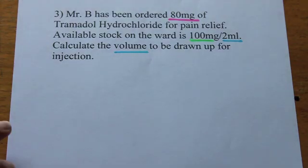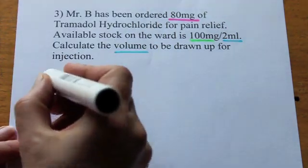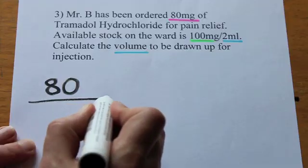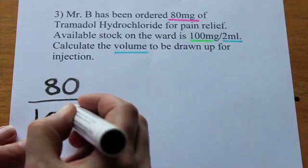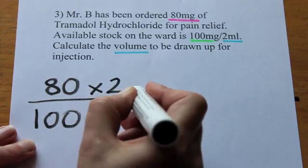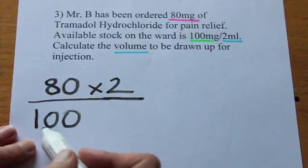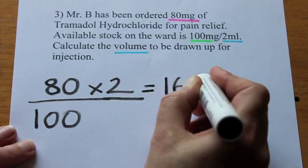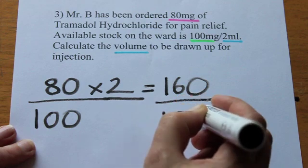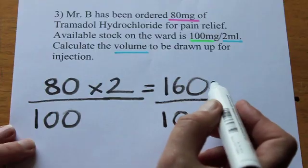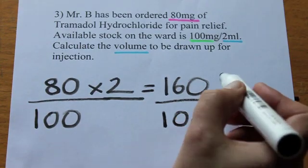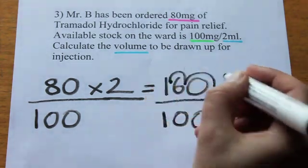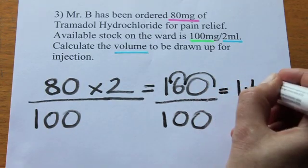Here's question number three. This time our patient needs 80mg of tramadol for pain relief. The stock available is 100mg, and it's in 2ml. I'll save the 100 for the trick at the end and do 80 times 2 first, which is 160. We still have to divide by 100, so I'll bring the decimal point back two places to the left. Here's the starting position, and the decimal point comes back one, two. So my final answer will be 1.6ml.